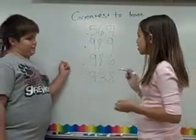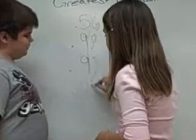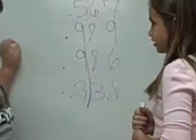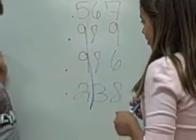How do we order these numbers? First you look at the first, which one is greatest? We can't tell because these two are both nines. Exactly.